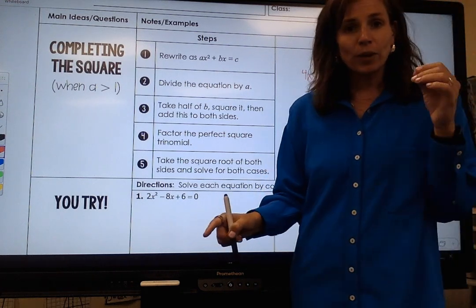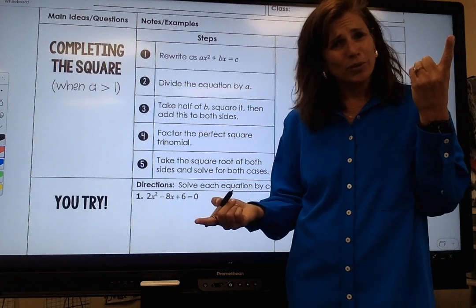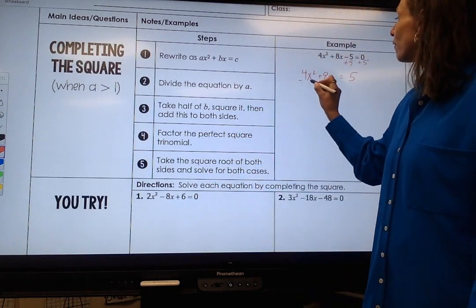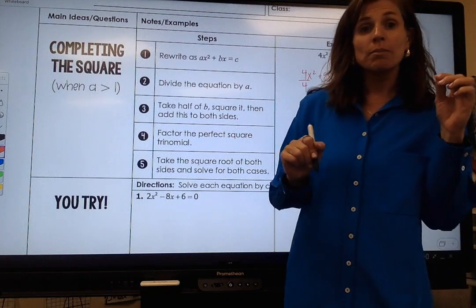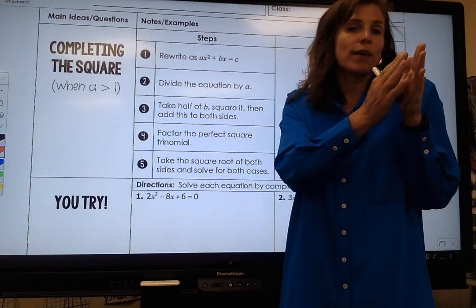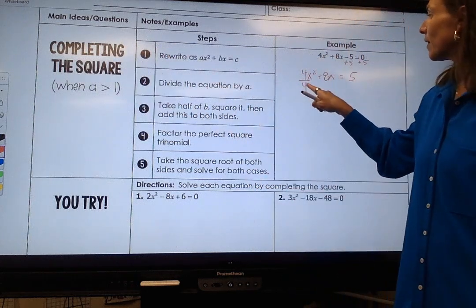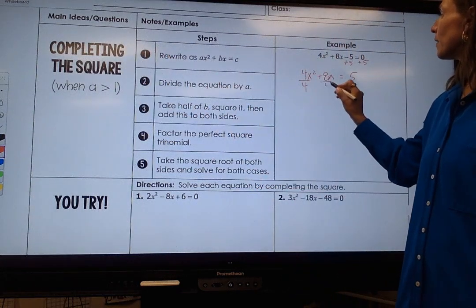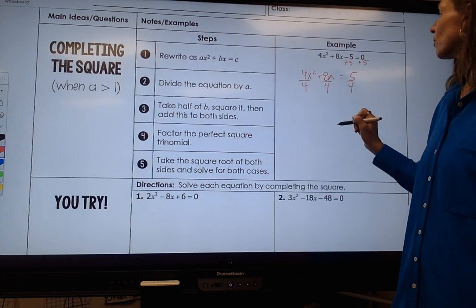I just want my quadratic term to have 1 as the value so what do I do? I divide it by 4, but remember equality. Whatever you do to one thing you have to do to everything else. So if I divide this term by 4, I divide this term by 4 and I divide this term by 4.